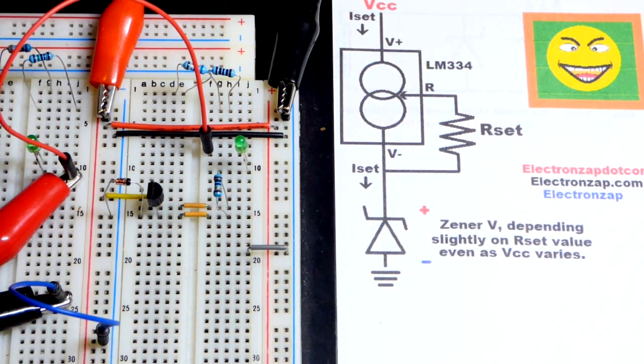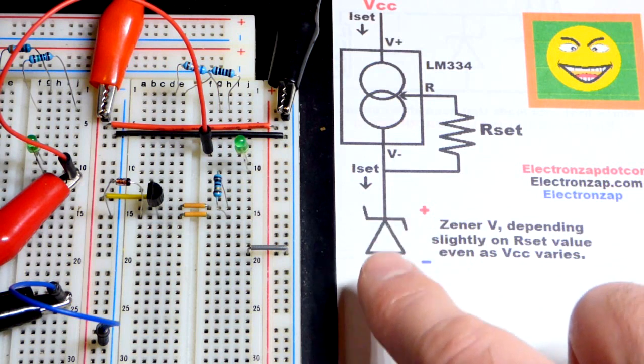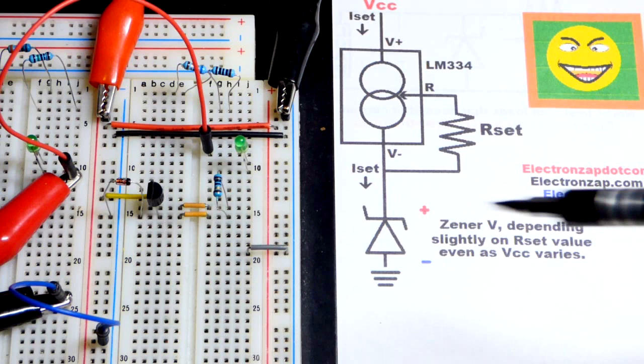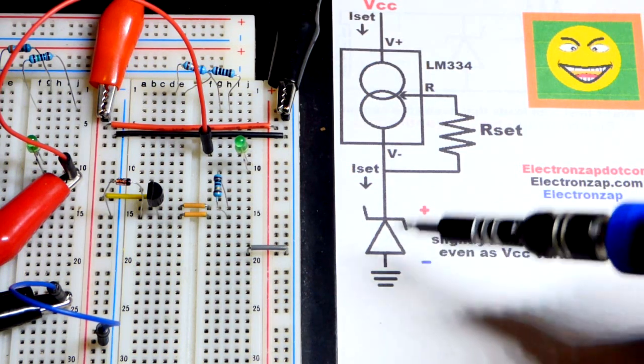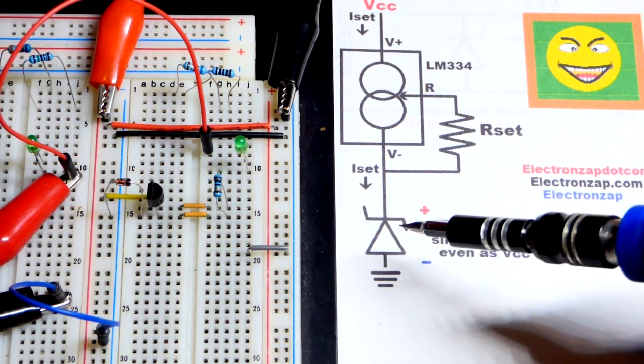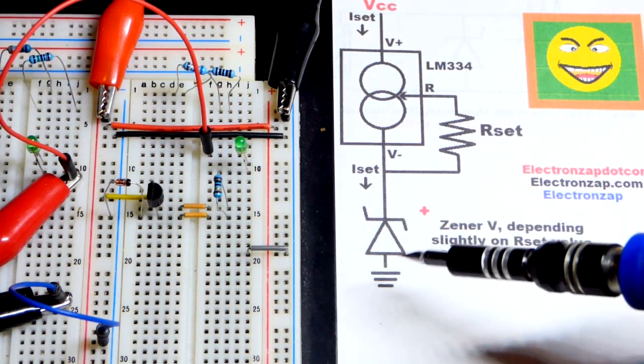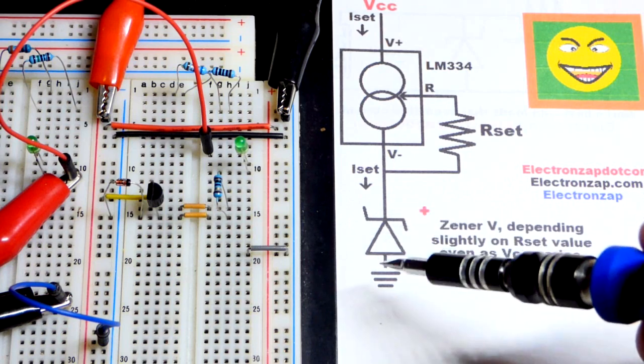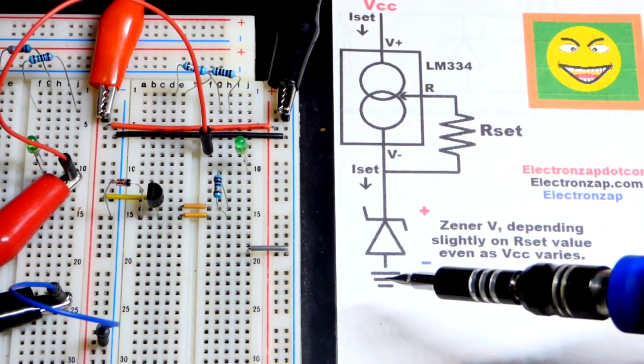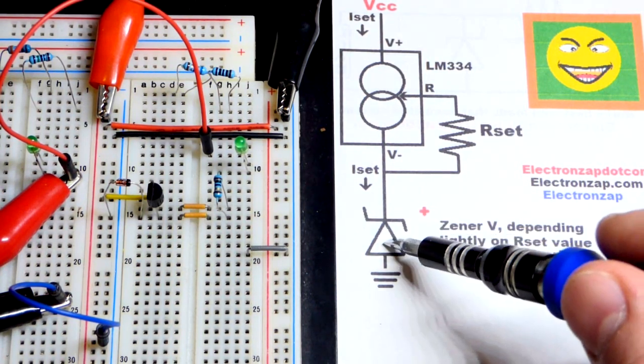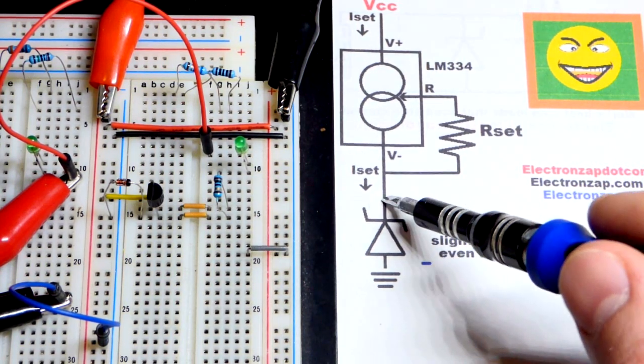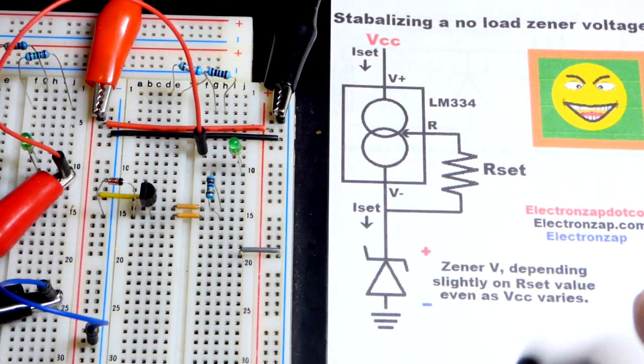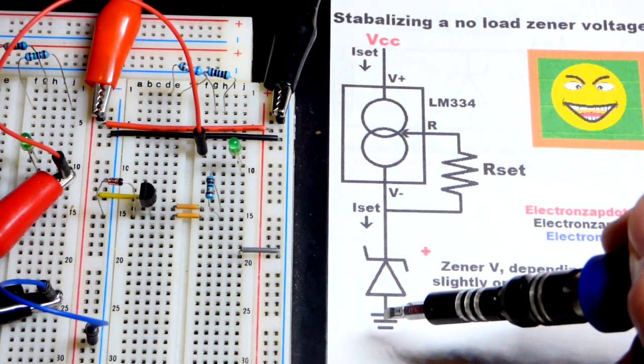The thing is that when current changes, the voltage that it actually drops is slightly different. So at higher current, it's going to build up a higher voltage. At lower current, it's going to be lower than 5.1 volts, so it is a tiny bit current dependent. So if you need a steady voltage, that's what this video is going to be about.